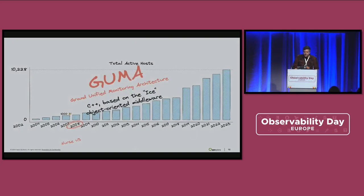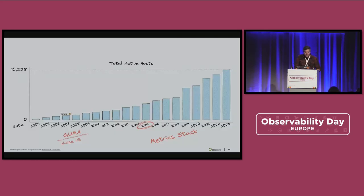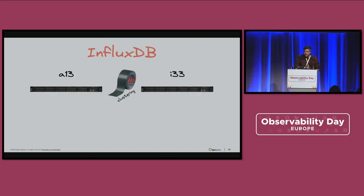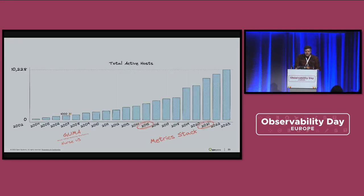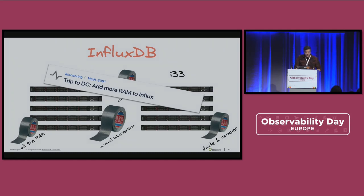So GUMA has been around since 2008. We also have a metrics stack. The most recent incarnation, beyond what I'm going to talk about later, is with InfluxDB, and this is where most of the statistics are coming from in the customer portal. We scrape locally on the host with Prometheus, feed that into Kafka, and a Kafka consumer then takes that into InfluxDB. This started in 2015. We have two physical data centers where InfluxDB is living. By 2021, it wasn't doing so well — we had scaled out as much as we could, but it needed a lot of manual intervention. My favorite jira ever: the trip to the DC to add more RAM to InfluxDB.